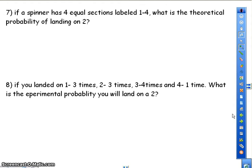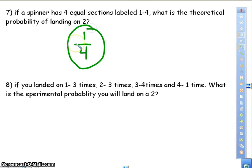Next one. If a spinner has four equal sections, labeled one through four, what is the theoretical probability of landing on a two? Theoretical comes from, in theory, what should happen. So I have four different outcomes, four different sections. And how many of them is a two? One. That is theoretical. Basically, it's finding the probability of a simple event.